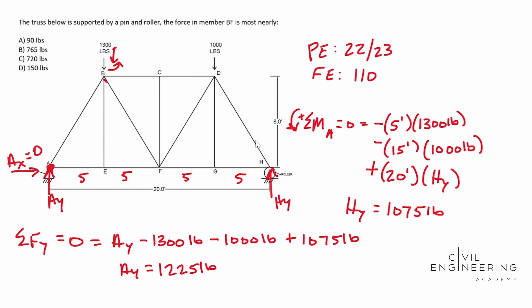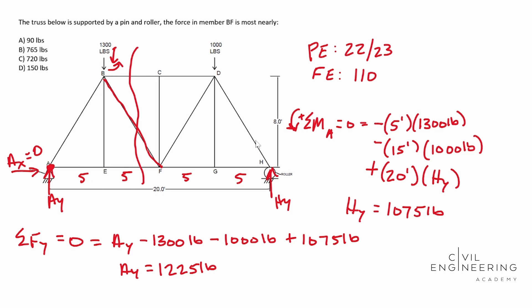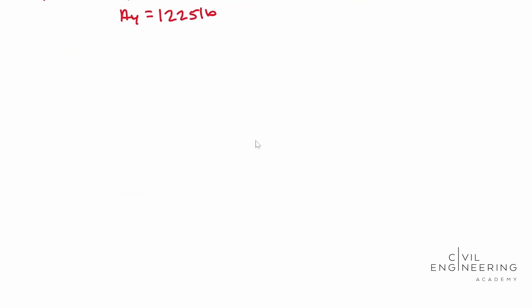So BF is going to be this guy. And what's going to be the best way to attack that? Well, it's going to be method of sections. You can do method of joints, but it may take you a while, but we're going to do method of sections. We're going to make our cut right here. And so we're going to expose all of these forces BC, BF, and then EF. So I'm going to draw a free body diagram underneath here.